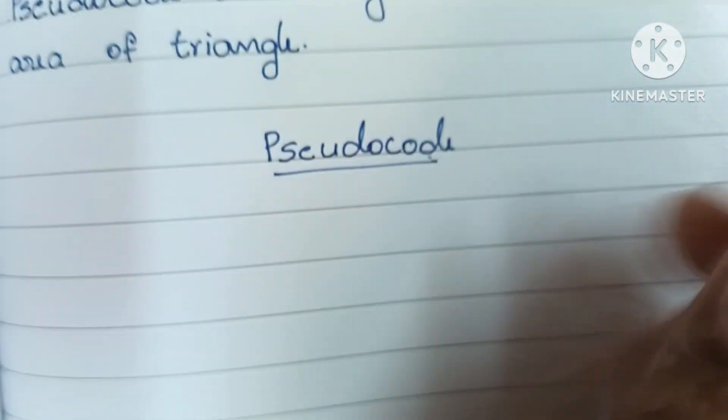Step two: read the three sides of the triangle — a, b, and c. Step three: calculate the semi-perimeter of the triangle. That is s = (a + b + c) / 2, which is the sum of the three sides divided by two.